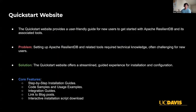The Quickstart website is designed to help new users get started with Apache ResilientDB and its tools. Before, setting up ResilientDB required a lot of technical knowledge, but the Quickstart website aims to be a one-stop shop solution for all new users and developers. It provides a guided experience, including installation instructions, code samples, and integration guides. It even includes a link to blog posts written by developers at Apache ResilientDB, and an interactive installation script download that allows the user to pick and choose which applications in the ecosystem they would like to use.